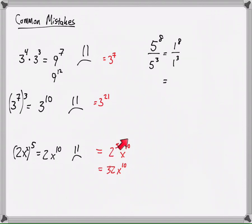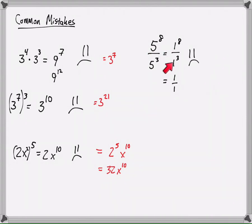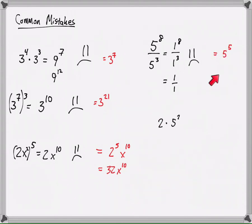Another mistake I see every year — students will divide the 5s and say the 5s cancel so there's just 1. It's total crazy talk. There are 8 sets of 5 divided by 3 sets of 5 for a grand total of 5 sets of 5. That's what should have happened.